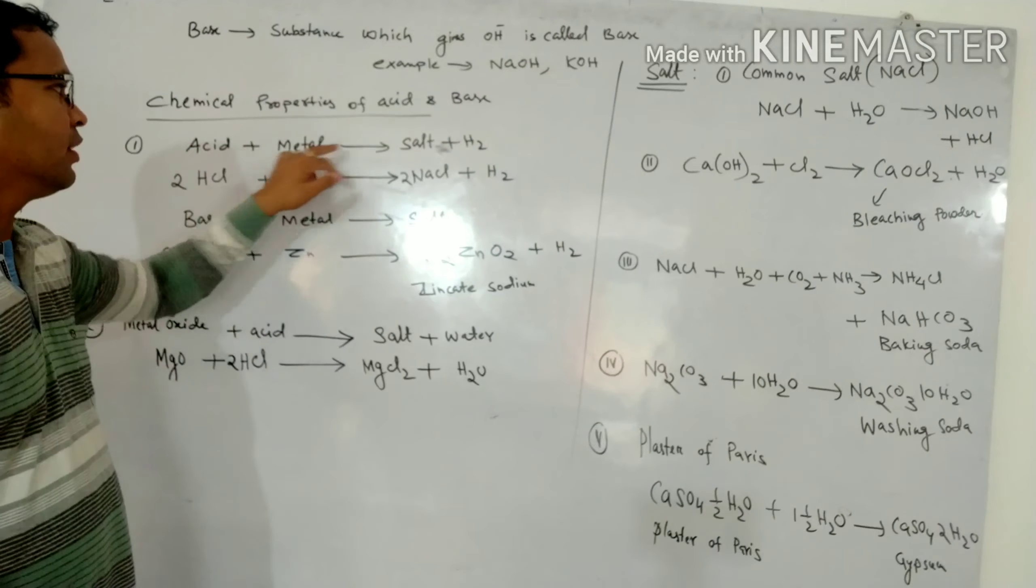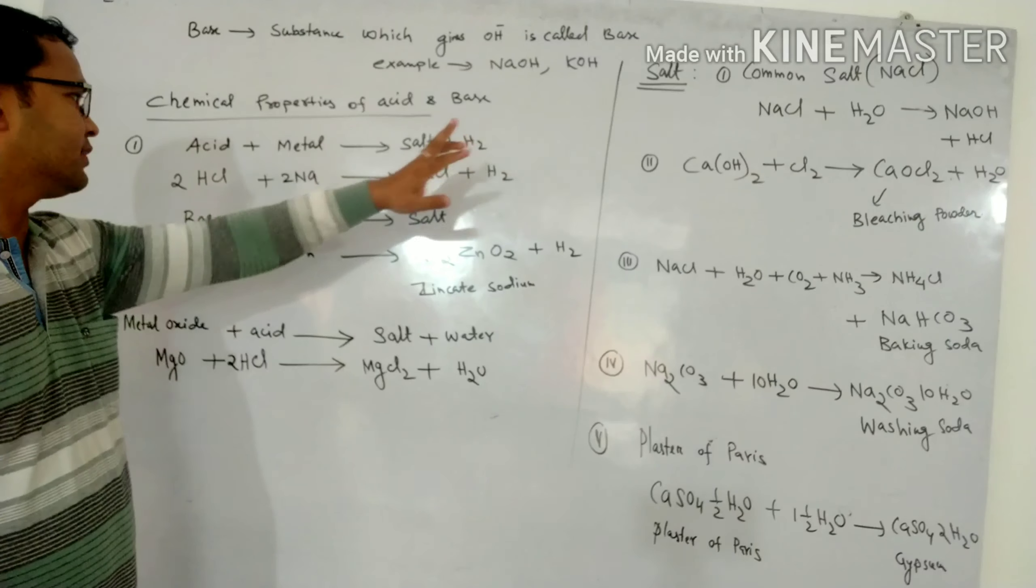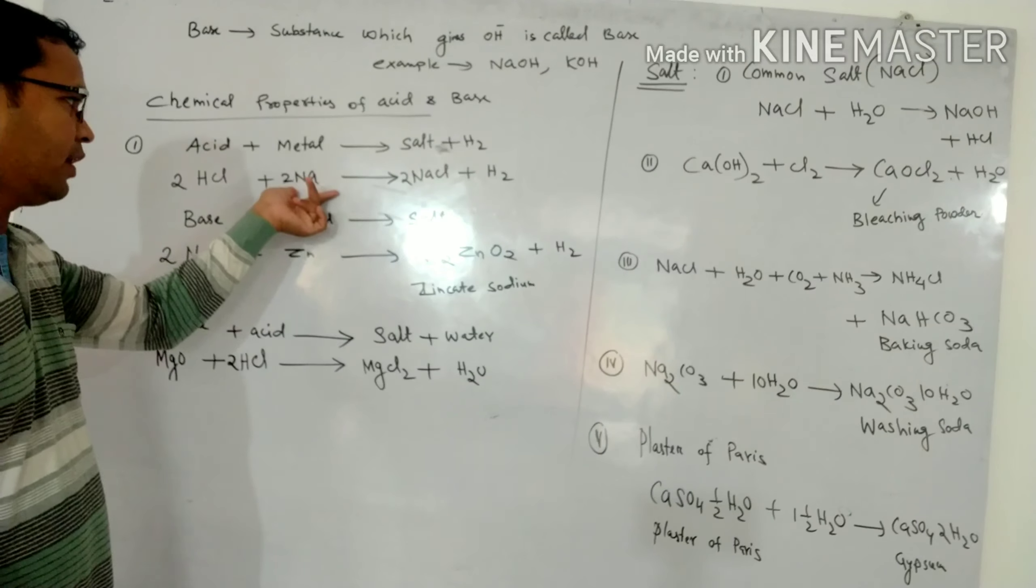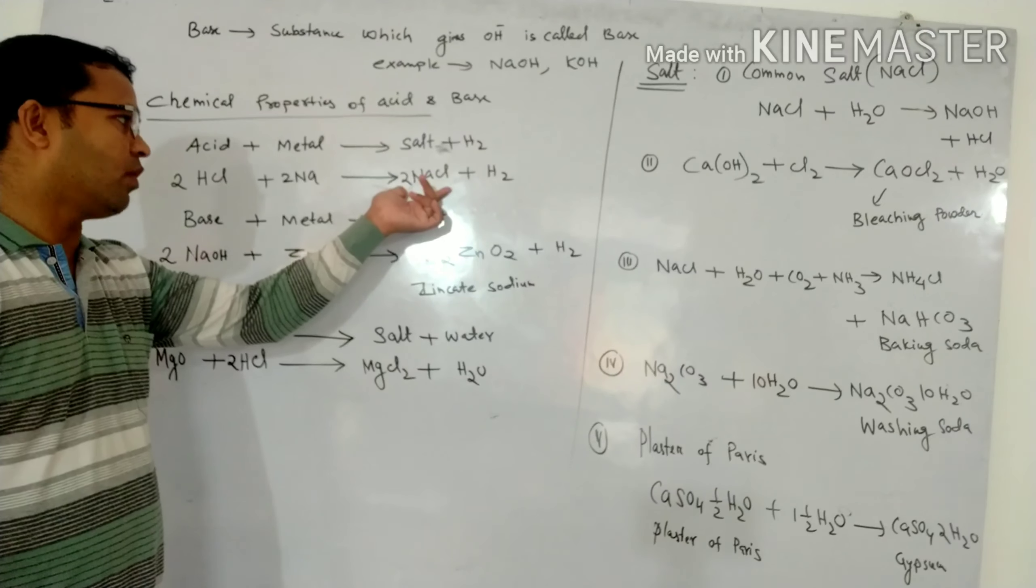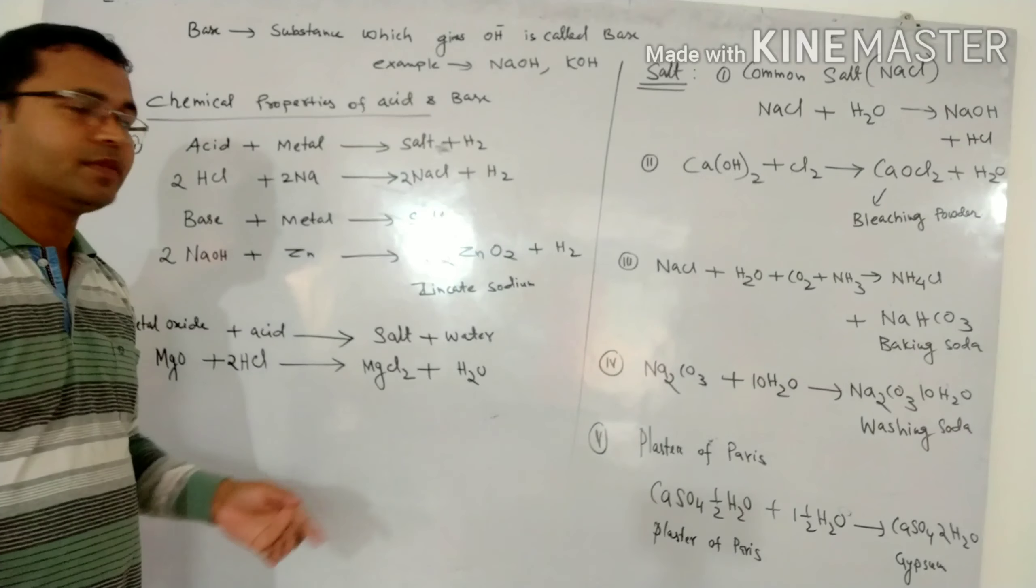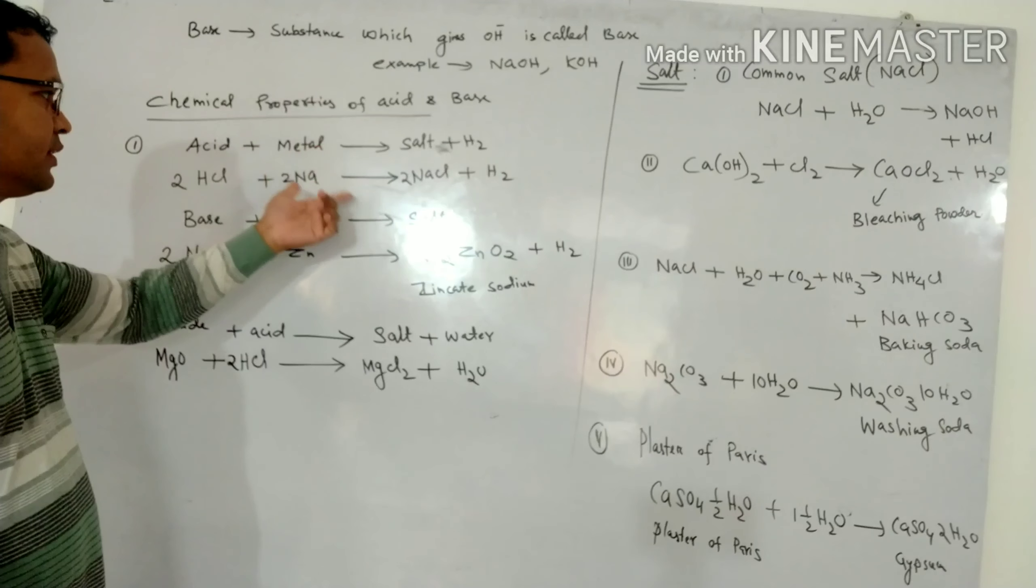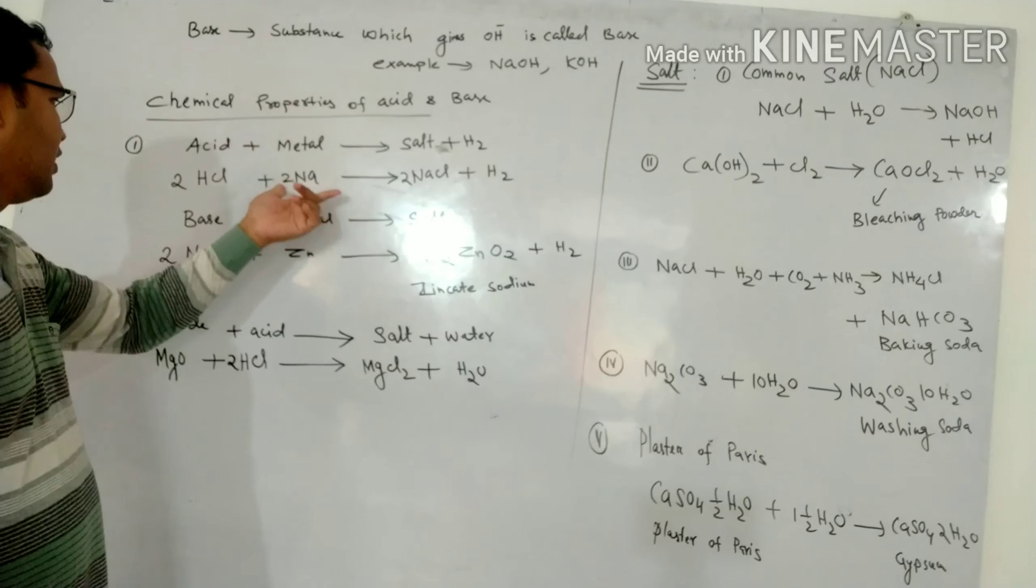Acid reactive metal gives salt and hydrogen gas. For example, hydrochloric acid reactive sodium metal gives sodium chloride salt and hydrogen gas. You will get so many reactions in books.